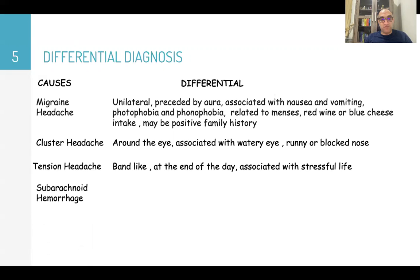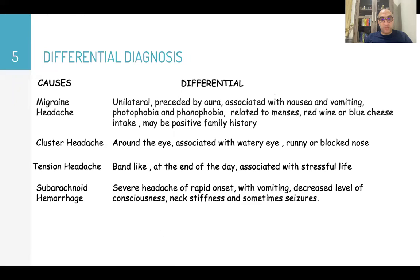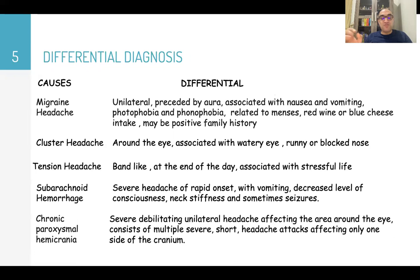Subarachnoid hemorrhage presents as severe headache of rapid onset with vomiting, decreased level of consciousness, neck stiffness, and sometimes seizures. Chronic paroxysmal hemicrania is a severe, debilitating, unilateral headache affecting the area around the eye — multiple severe short headache attacks affecting only one side of the cranium.